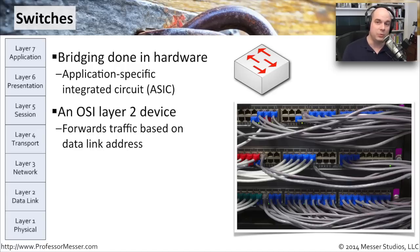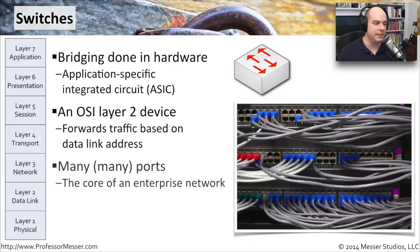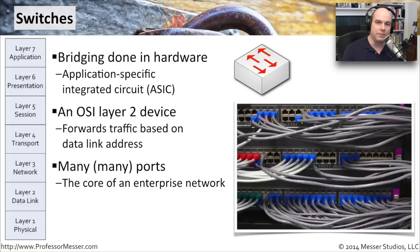Whenever it needs to decide which way packets go, it looks at the destination MAC address and references back the big table. It says, oh, that particular device is on port 7, I'm going to send the traffic over to port 7. There are many, many ports on these enterprise devices. They really are the core of an enterprise network. If you're in a large or even a small environment and you're plugged into the network, you're probably plugged into a switch.